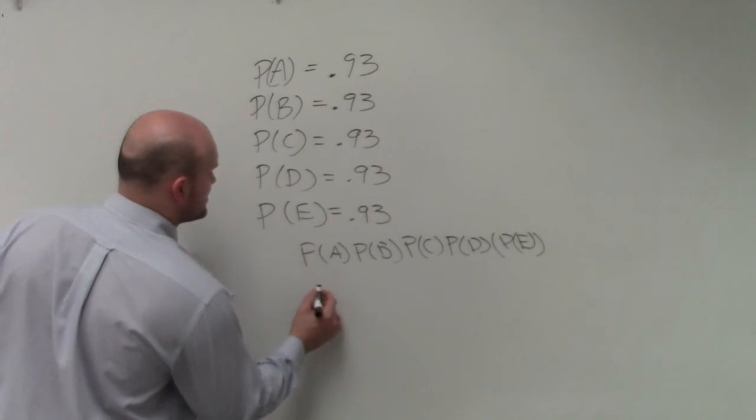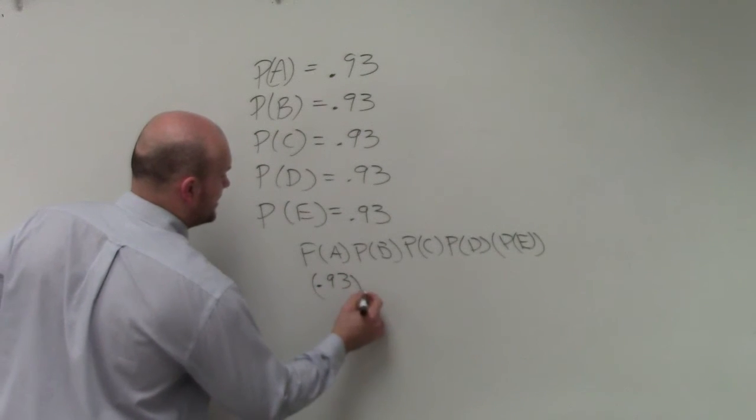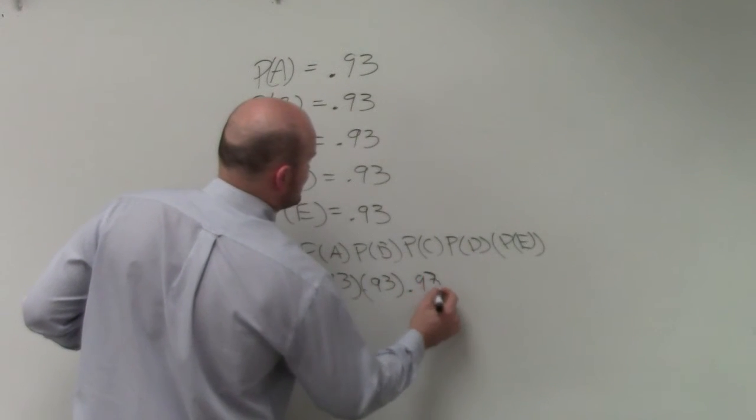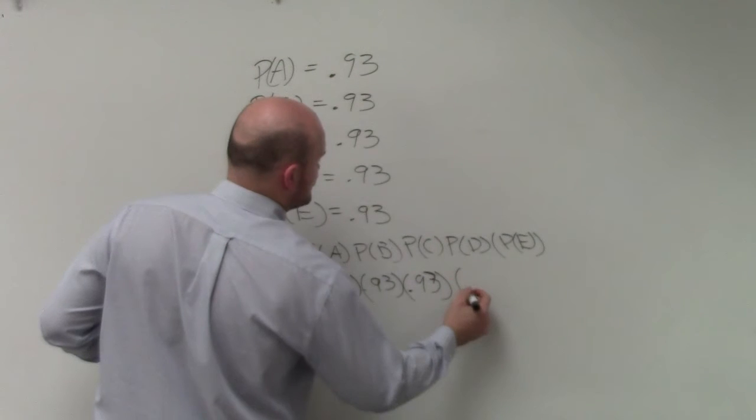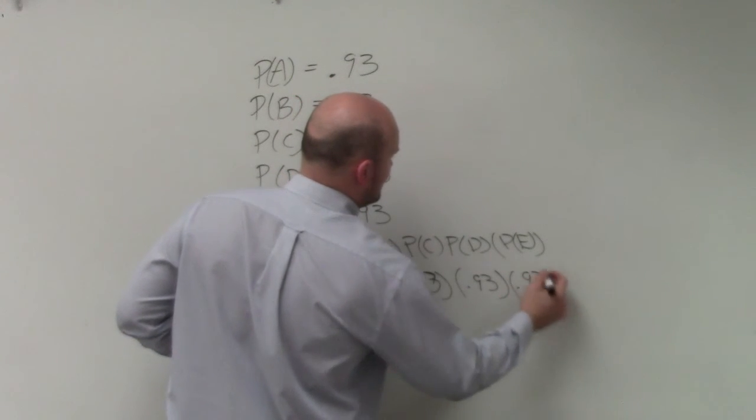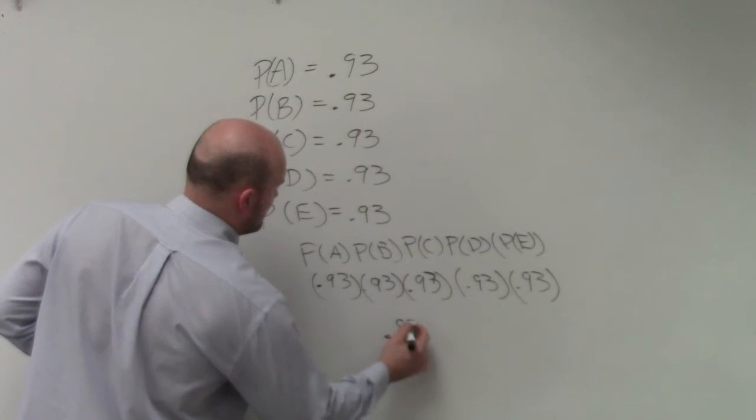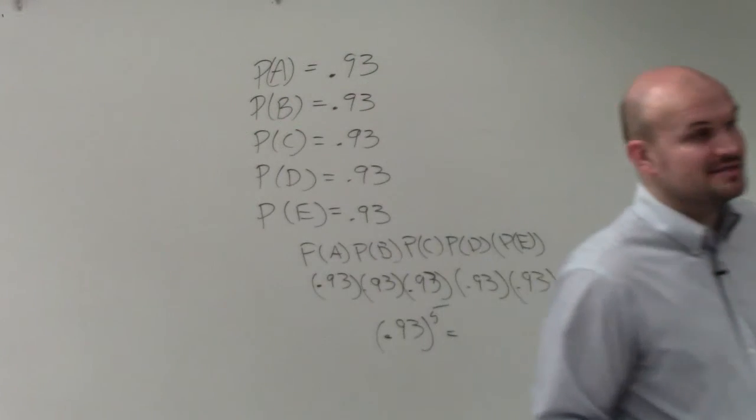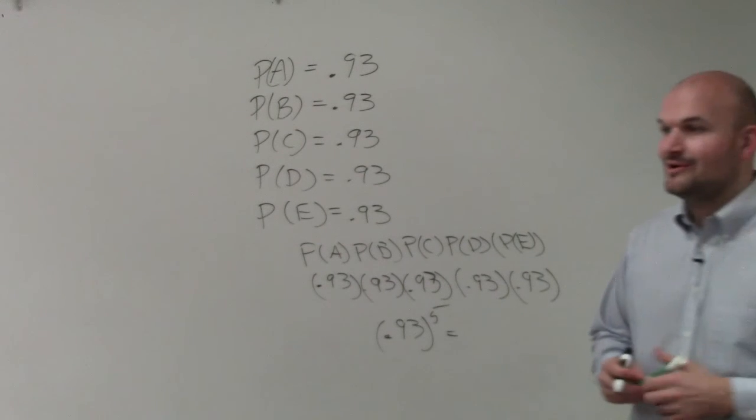So then, Ryan, all I simply need to do is get out my calculator and multiply 0.93 by itself five times. Or to simplify this process, we could also write 0.93 raised to what power? Fifth power. And when we do that, we get 0.93 raised to the fifth power is...